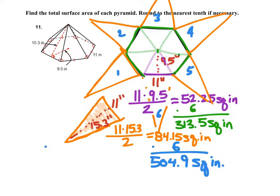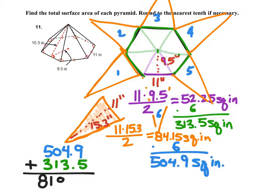So I have the lateral surface area, 504.9 square inches. I have the area of the hexagonal base, 313.5 square inches. And if I wanted the total surface area of this shape, I would add those two together to get 818.4. Don't forget to label this in square inches. And this right here at the bottom is our final answer.